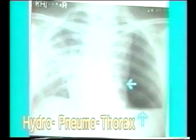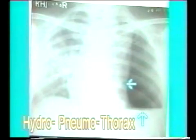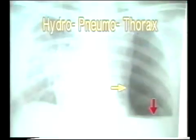This is another x-ray showing Hydro-Pneumothorax on the left side. Note the fluid level, the air above it, and the collapsed lung. In the close-up view, the red arrow shows the fluid level and the yellow arrow shows the collapsed lung border.